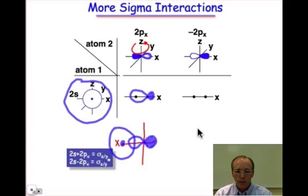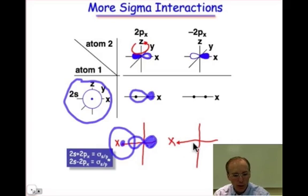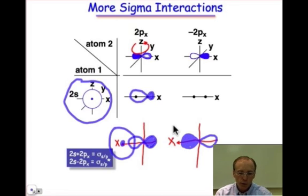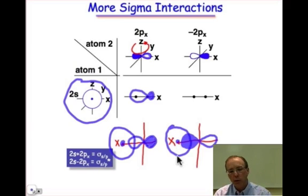When we carry out the same process for the minus 2px orbital, we end up with our x-axis now pointing in this direction, and when we color our orbital, we end up with the shaded part on the left-hand side and the unshaded part on the right-hand side. And so when that combines with the positive 2s orbital from atom 1, we see that they have opposite wave functions.